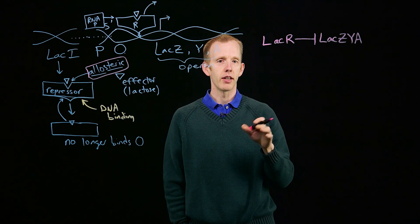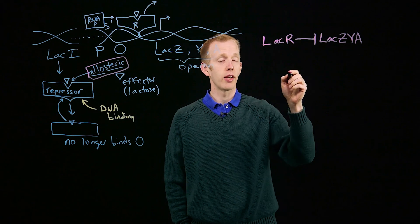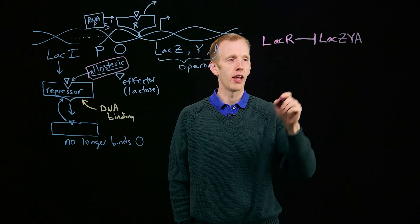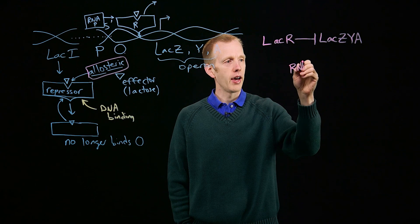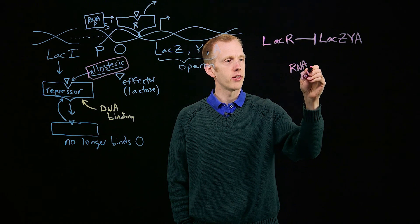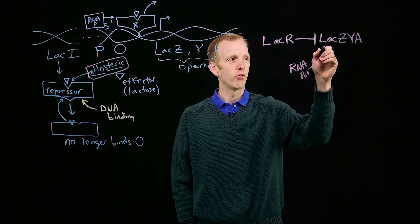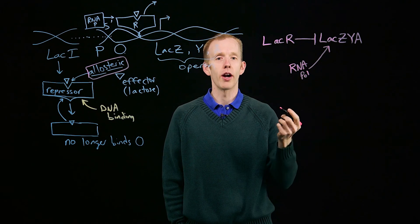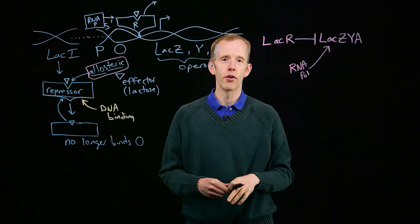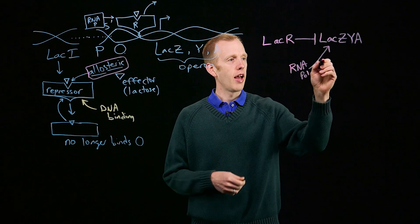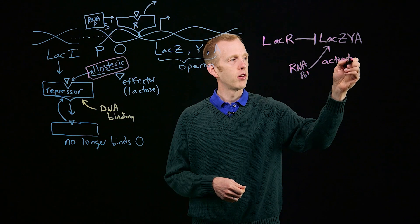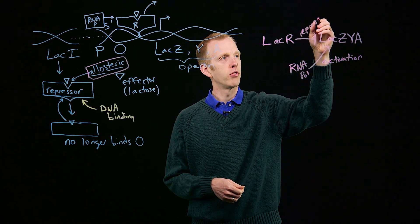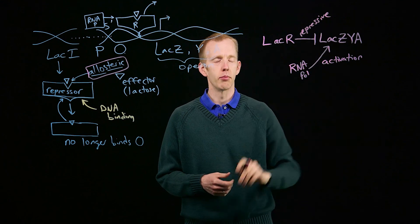On the other hand, if something stimulates gene expression — for example, RNA polymerase is essential for the activation of lacZ, Y, and A — we would write that RNA polymerase activates lacZ, Y, and A using a regular single-headed arrow. So we use regular arrows for activation interactions and blunt-headed arrows for repressive interactions.